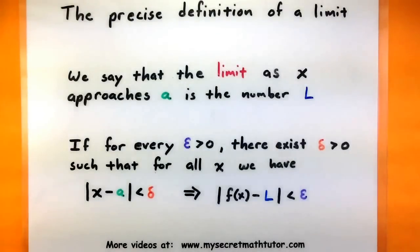In this definition, it says that we say that the limit as x approaches a is some number L if the following condition is met. If for every epsilon greater than zero, there exists a delta greater than zero, such that for all x, we have the following: whenever the absolute value of x minus a is less than delta, it forces the absolute value of f of x minus L to be less than epsilon.